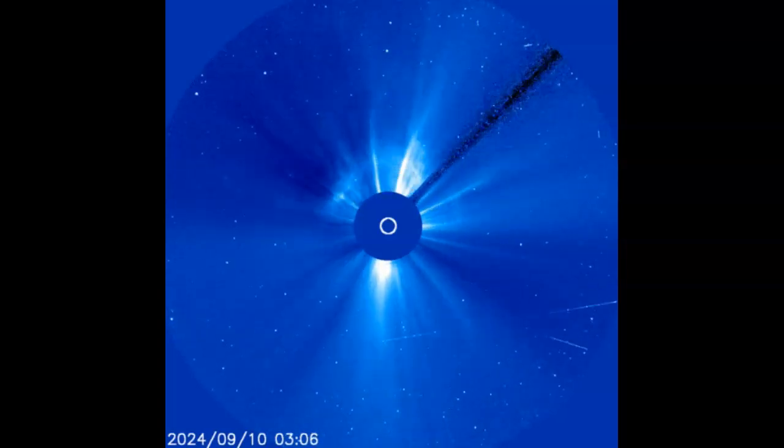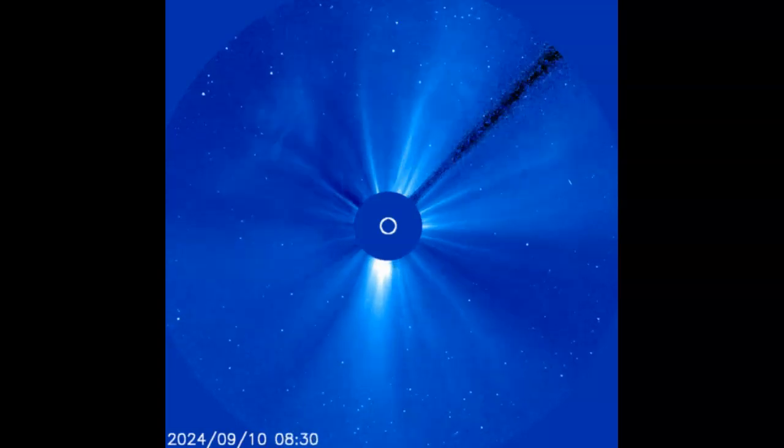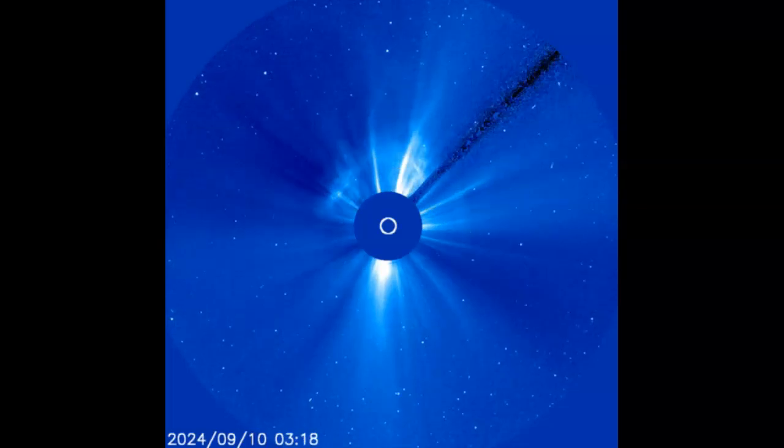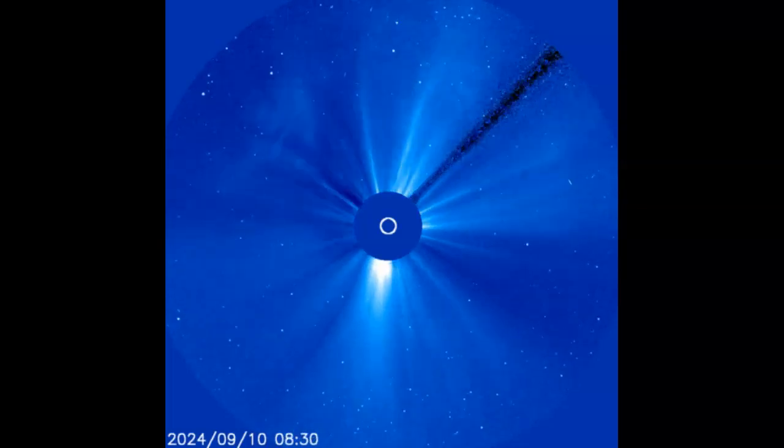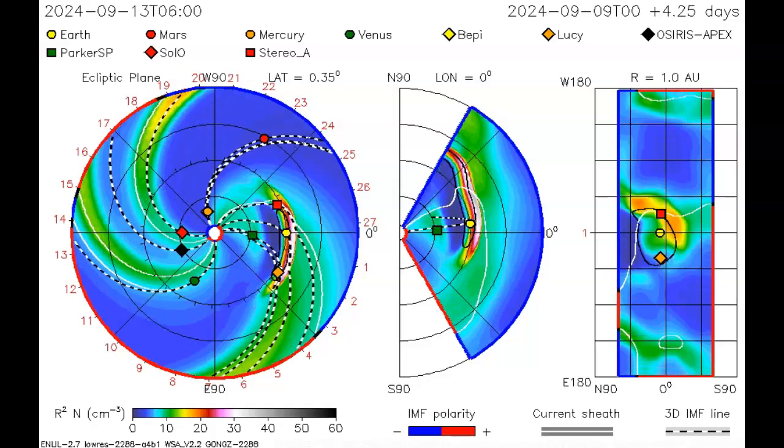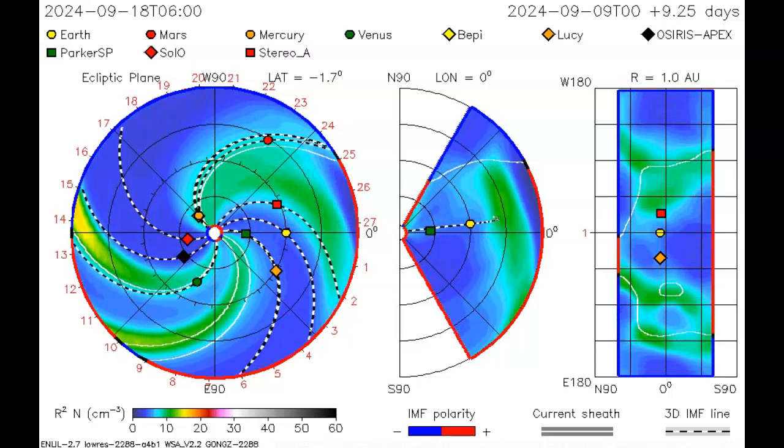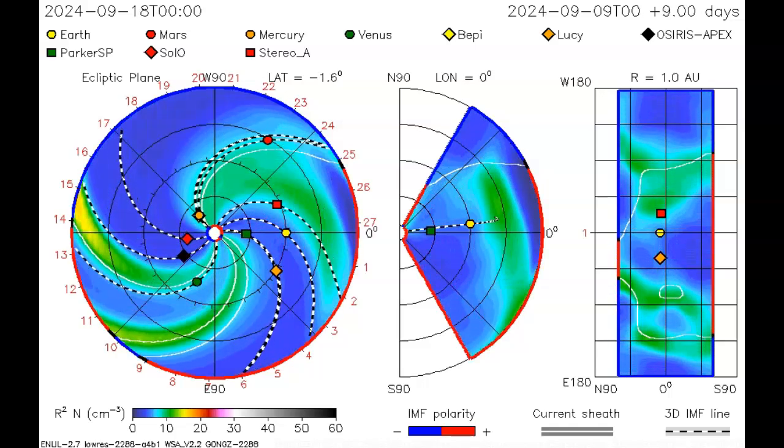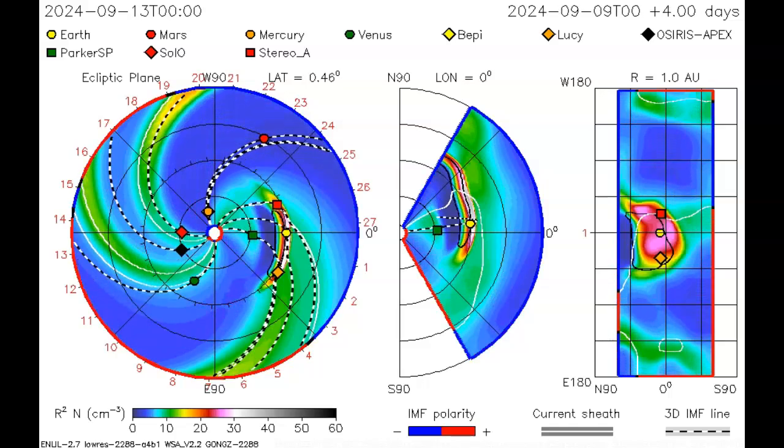The impact could cause a G2 geomagnetic storm late on September 12th. Jumping over to NASA's Goddard ENLIL spiral, we see the coronal mass ejection headed outbound and headed directly for Earth.